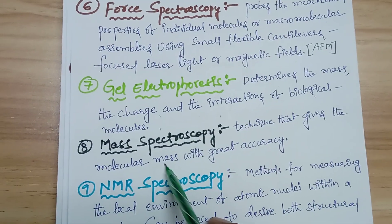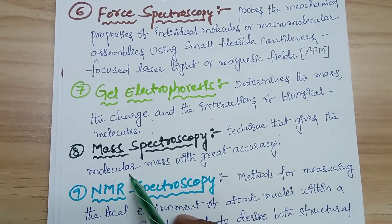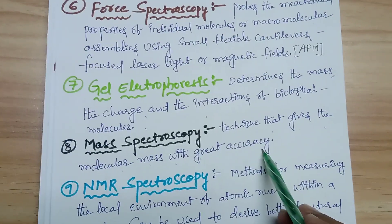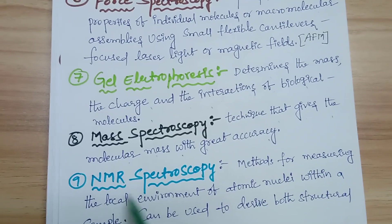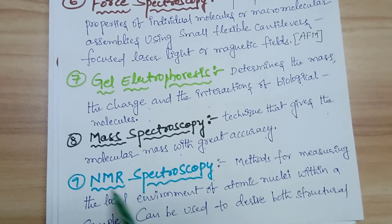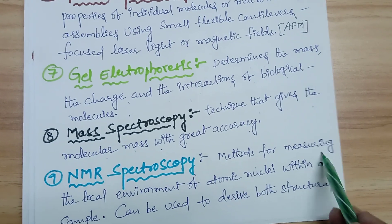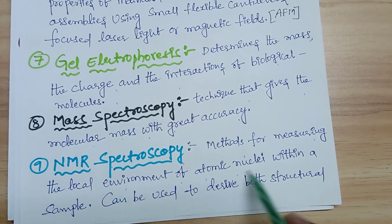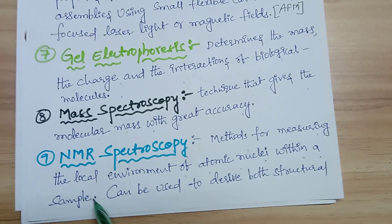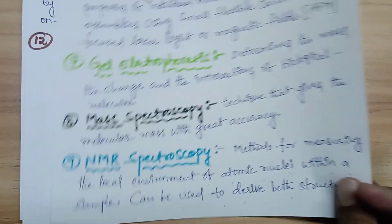The eighth technique is mass spectroscopy — a technique that gives the molecular mass with great accuracy. The ninth technique is NMR spectroscopy — Nuclear Magnetic Resonance spectroscopy — a method for measuring the local environment of atomic nuclei in a sample.